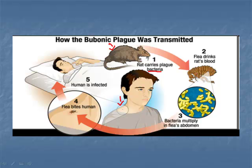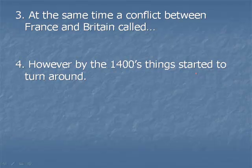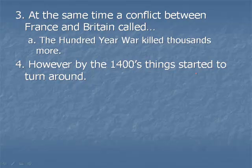Another thing contributed to all of this uncertainty in Europe. At the same time, a conflict between France and Britain called the Hundred Years' War killed thousands more. So we have a lot of people dying, a lot of chaos, terrible things happening. But in the 1400s, things started turning around.